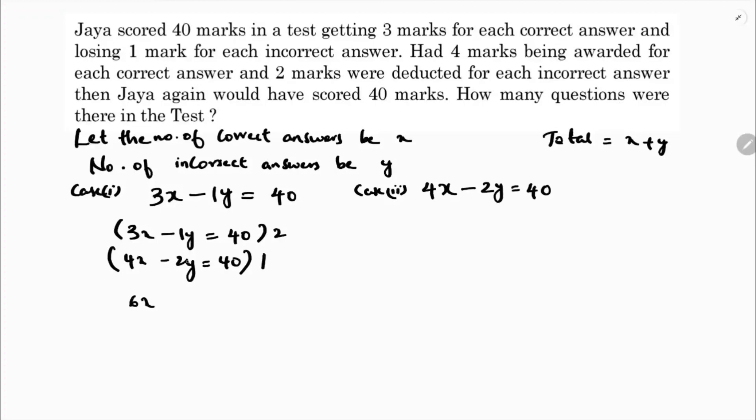I will get 6x minus 2y equals 80. Second one as it is, 4x minus 2y equals 40. If I subtract, this minus will become plus and here minus. 6 minus 4, 2x equals 40. So 2x equals 40, x equals 40 by 2 which is 20.